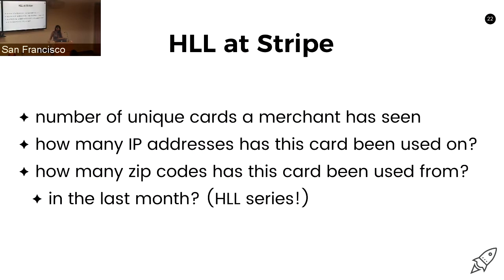At Stripe, where I first ran into it, we used it in a couple of different places. A lot of our transaction modeling algorithms use this as an input to their features — things like the number of unique cards a merchant has seen, how many IP addresses a card has been used on, how many zip codes a card has been used from, which tells you how likely the card is to have been compromised. On the observability team, which I work on now, we use it for accounting the number of unique merchants that may have seen a particular error, which tells us how distributed an error might be across our entire fleet.